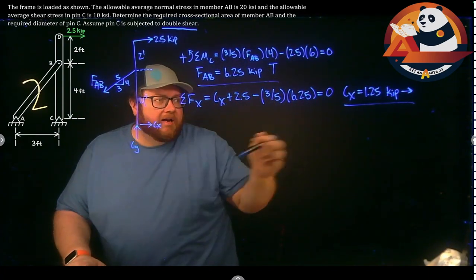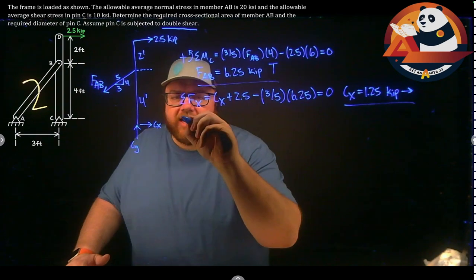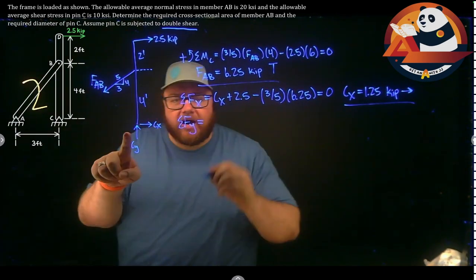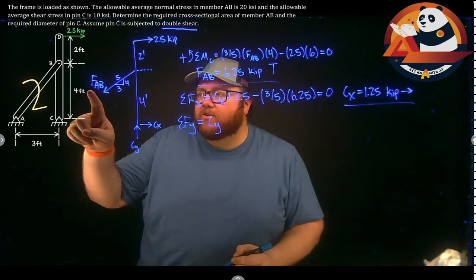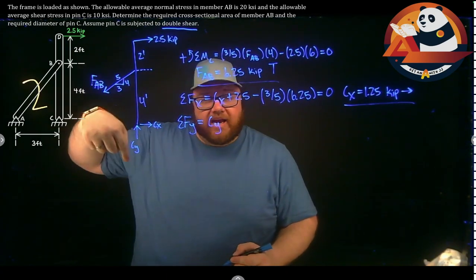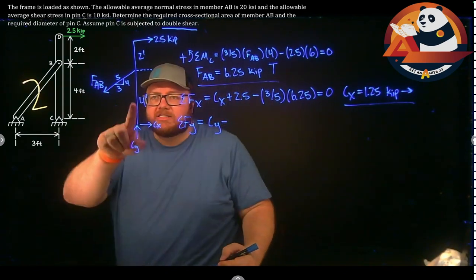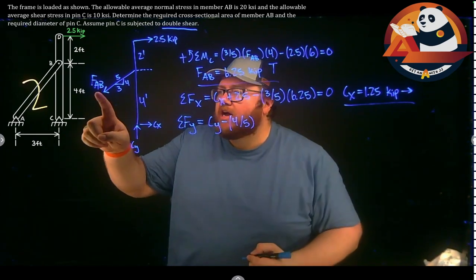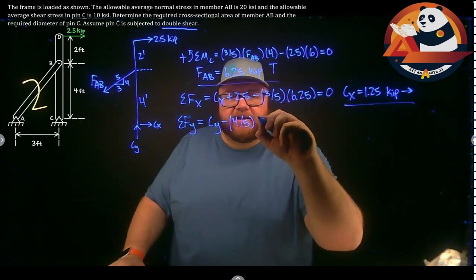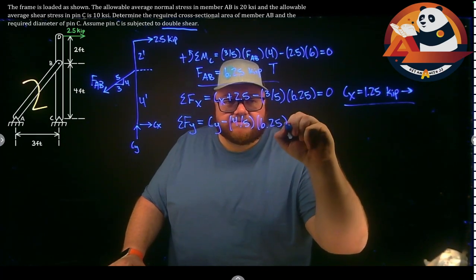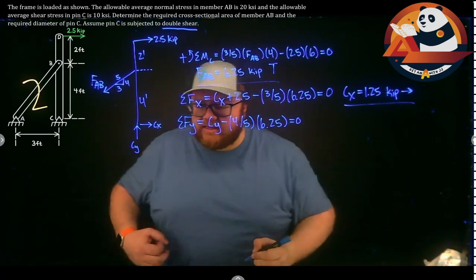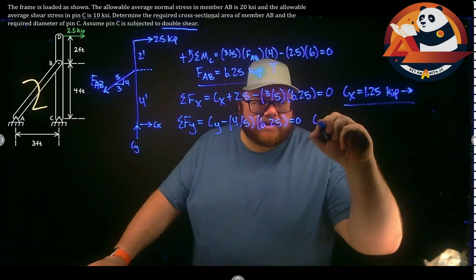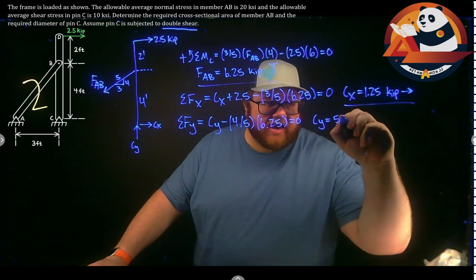For the last support reaction, summing forces in the Y direction: C_Y going up minus the Y component of F_AB — that's (4/5) × 6.25 — equals zero. Solving for C_Y gives 5 kips upward.